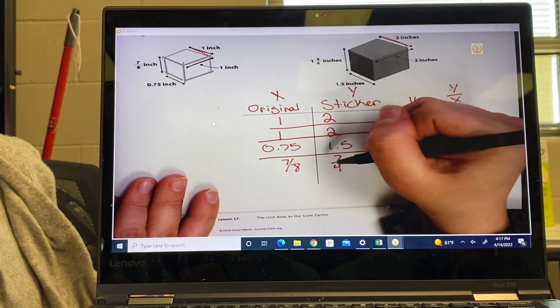Number one: line up the corresponding dimensions. And when I say dimensions, make sure we are using these. This is the dimension, one-half inch, one-half inch. That's what they're doing.